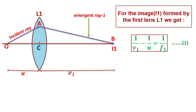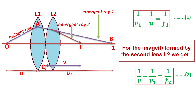Now another lens L2 is kept in the path of emergent ray 1. Then another ray, emergent ray 2, comes into existence, forming image I.